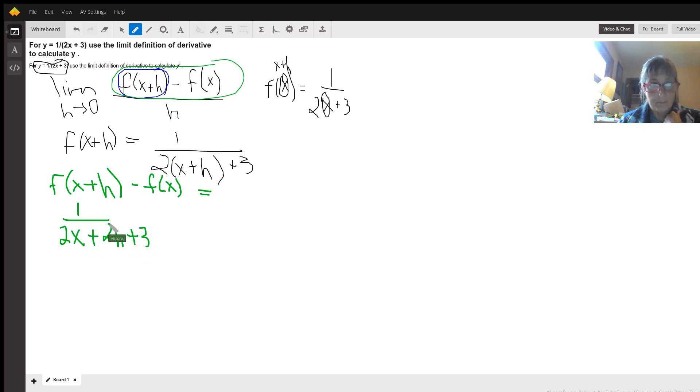Minus – well, f of x is what we were given. It's right here. So 1 over 2x plus 3. Now remember, how you subtract fractions, you need a common denominator. So this common denominator is going to be 2x plus 3 times 2x plus 2h plus 3.